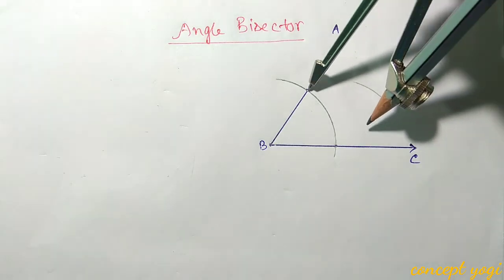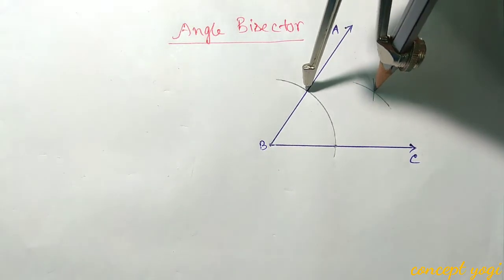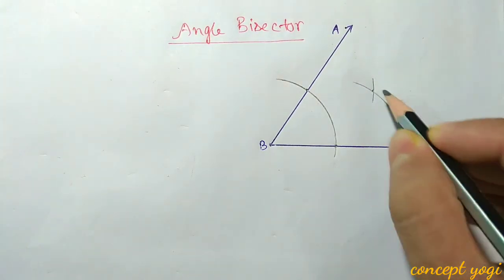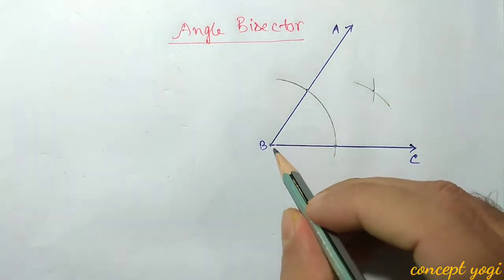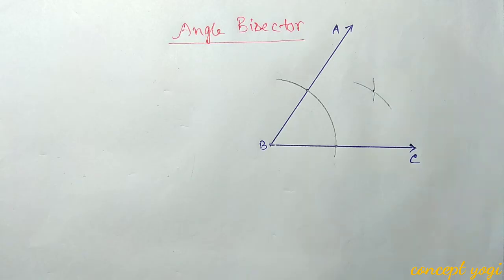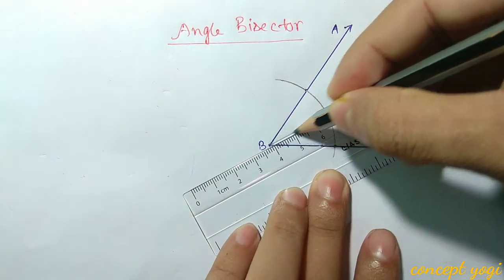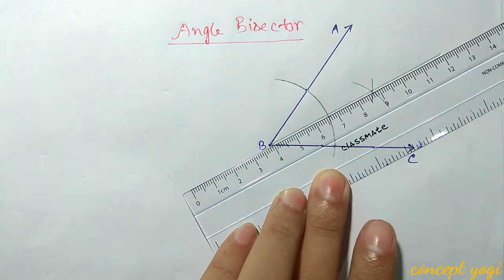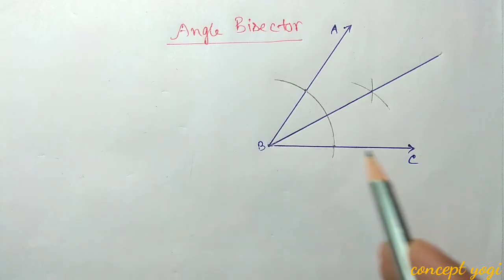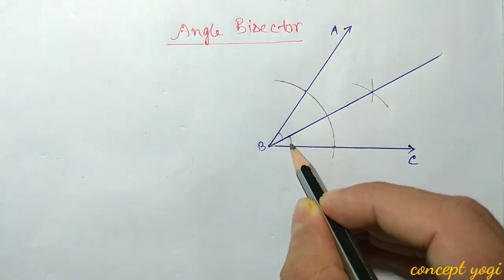Similarly, taking the other intersection point as center, draw another arc such that the two arcs intersect. The two arcs intersect at a point. Now draw a ray passing through vertex B and through this new intersection point. In this way we bisect angle ABC into two equal halves — the two angles will be equal.